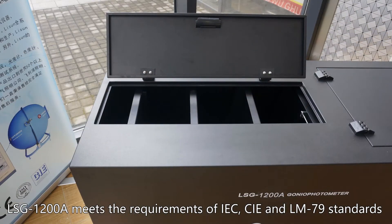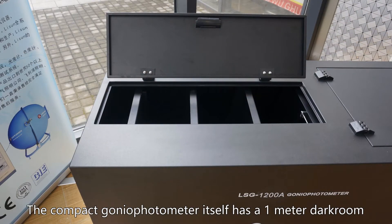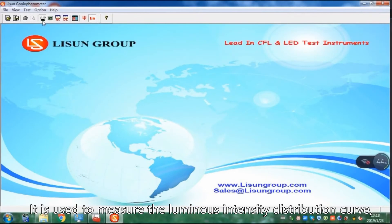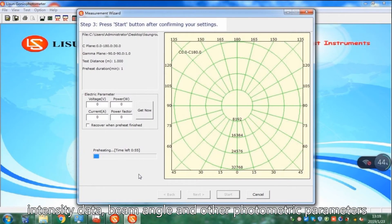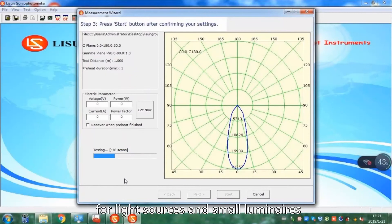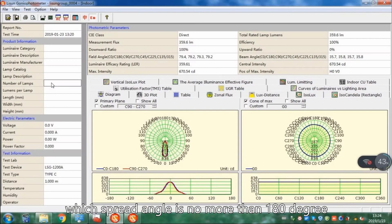The compact gonio photometer itself has a 1 meter darkroom. It is used to measure the luminous intensity distribution curve, intensity data, beam angle, and other photometric parameters for light sources and small luminaires which spread angle is no more than 180 degrees.